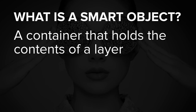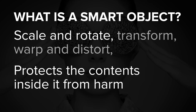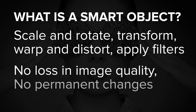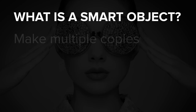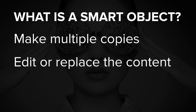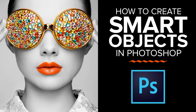A Smart Object is a container that holds the contents of a layer. The container protects the contents inside it from harm. We can scale and rotate the container, apply transformations, warps and distortions, and even apply Photoshop's filters to a Smart Object, all without any loss in quality and without making a single permanent change to the layer inside it. We can make multiple copies of a Smart Object, all displaying the same content, and then edit or even replace the content, and have our changes instantly appear in each and every copy. And this makes Smart Objects perfect for creating reusable templates. For now, let's learn how to create Smart Objects.